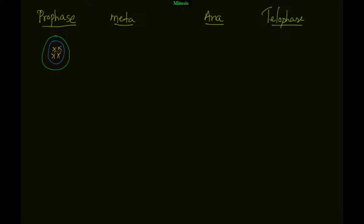The red chromosomes are the same type — they have the same genetic coding — and the yellow ones are the same. So this is your first stage: prophase. This is your nuclear membrane. In prophase, this nuclear membrane breaks down.